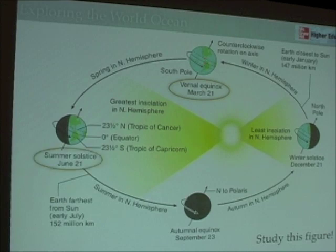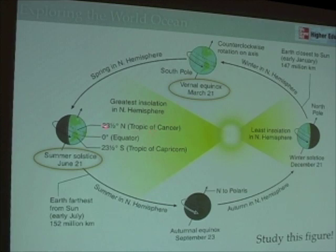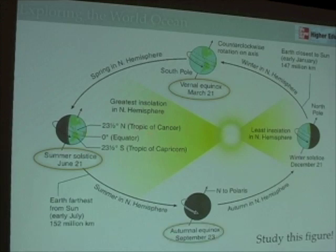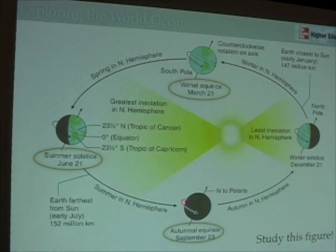As we move from the vernal equinox to the summer solstice, or the first day of summer, we have the sun directly overhead at 23 and a half degrees north. This is the Tropic of Cancer. 23 and a half degrees north defines the upper limit, or the northern hemisphere limit, of the tropics. As the Earth continues on its journey around the sun, it reaches a place again where the sun is directly overhead — this is the autumnal equinox — and the sun is directly overhead the equator, headed towards being overhead in the southern hemisphere.